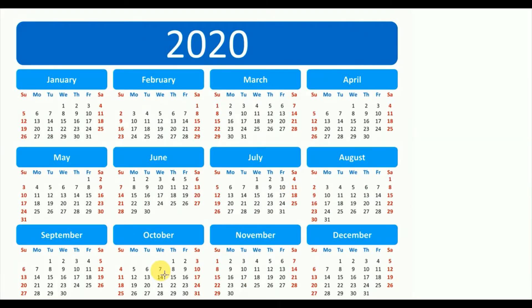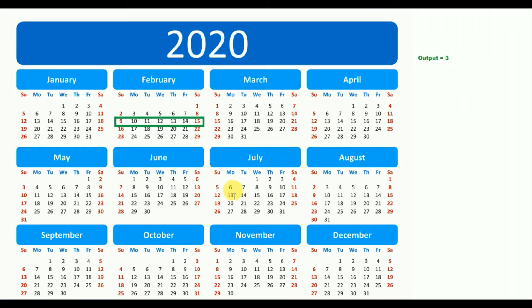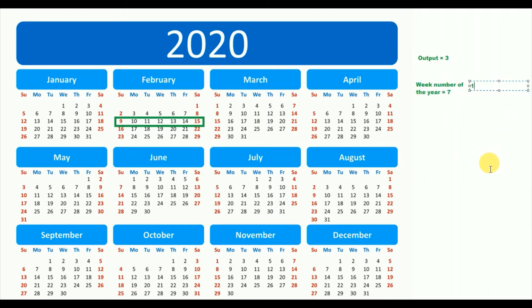Let's see how we can achieve that. It's time to generate the formula to get the week number of the month. For an example, the output we want is three. To get it, first we need the week number of the year — let's say that equals seven.